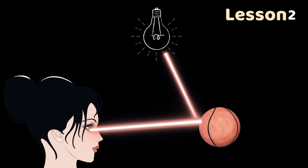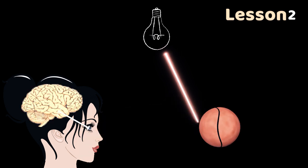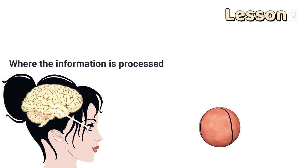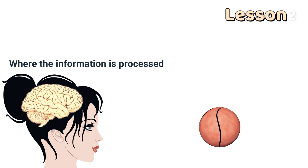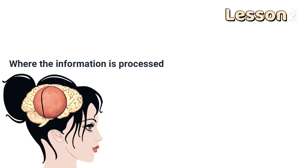Then the eyes send messages to the brain where the information is processed. As we learned in the nervous system lessons, the brain interprets the messages as an image of a ball. Can humans see in the dark?